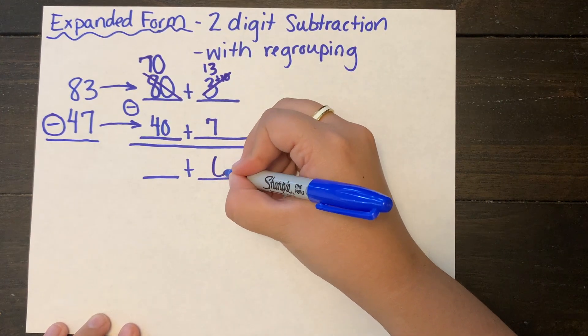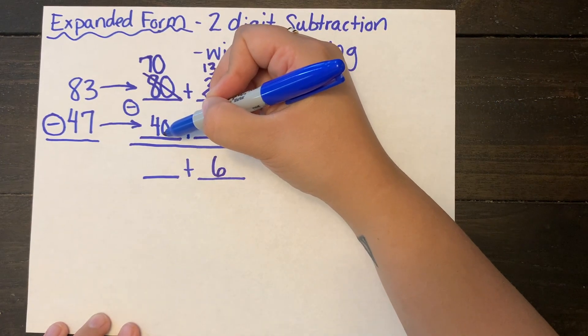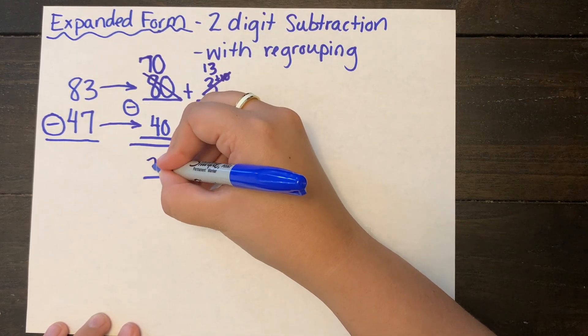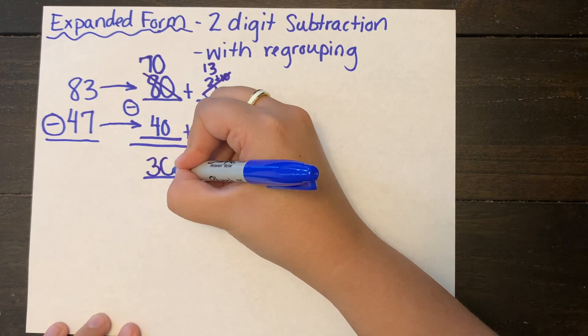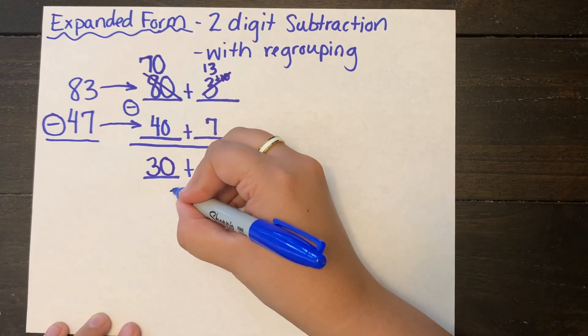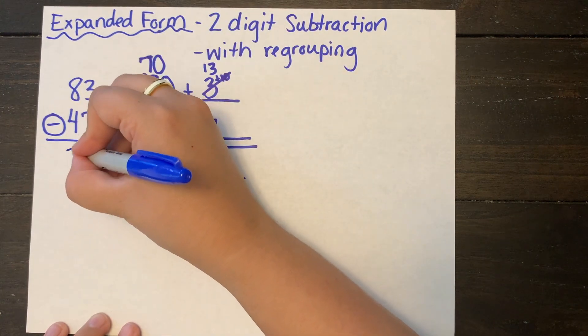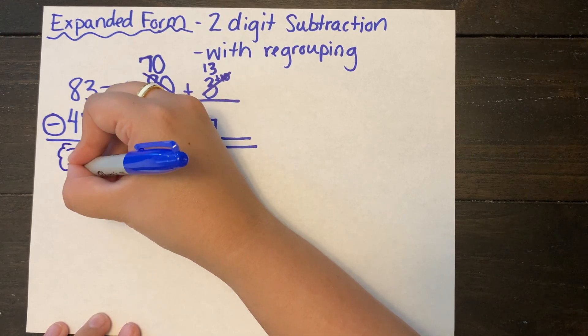So 13 minus 7 equals 6 and then 70 minus 40 equals 30. You can skip count by tens to find this. You can draw quick pictures. So then I'm just combining 30 plus 6 to equal 36 and I'm writing my answer underneath the equal sign.